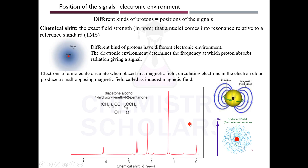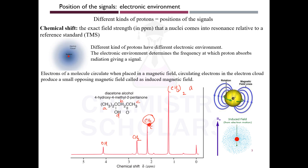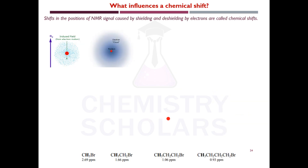Consider an example with four types of protons — A, B, C, and D — giving four signals. One is for OH, one for CH2, and two for CH3 groups. The integrations are different: one proton, two protons, three protons, and six protons. Despite both being CH3 groups, they appear at different positions because of different electronic environments.